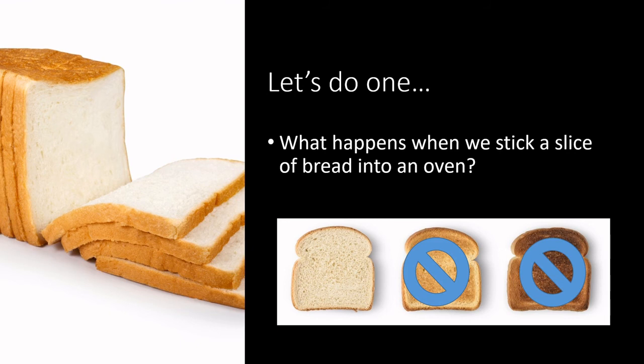Was the oven functioning properly? Did the heat that was applied in this oven actually interact with the bread? Was the bread somehow insulated from the heat? Were there other things impeding access of the radiant heat from the heating element?